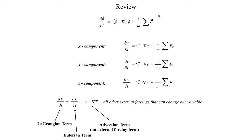So using Newton's second law, we derived our atmospheric equation of motion to model how our atmospheric wind changes in three dimensions. We can also break that down into three individual components. The x component or the zonal component: the local change in u, which is the zonal component of the wind with time, is equal to the momentum advection term plus the sum of all the mass normalized forces acting on it in the x direction.